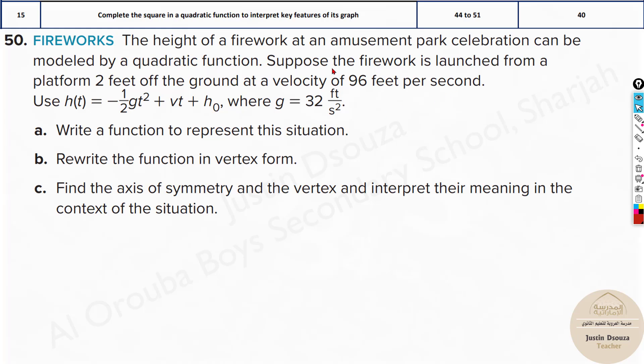The height of a firework at an amusement park celebration can be modeled by a quadratic function. Suppose the firework is launched from a platform two feet off the ground at a velocity of 96 feet per second. Use h(t) equals this given equation, where g equals 32 feet per second squared. Because everything is in feet, we have to use the acceleration due to gravity as well in feet per second squared. Now let's see what is known. G is known. What is v? Velocity is given—this is v. And the height, h naught, initial height is 2 feet.